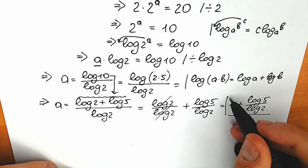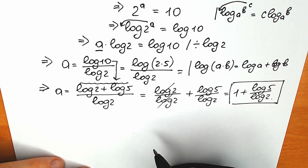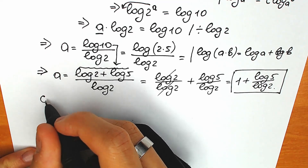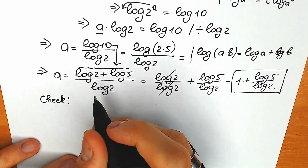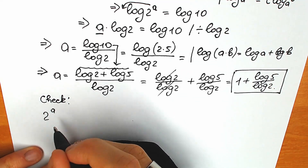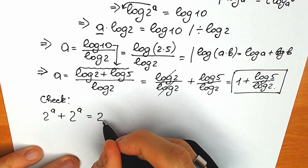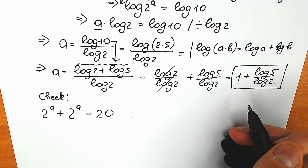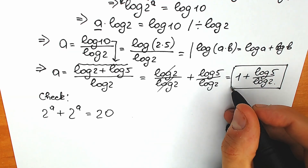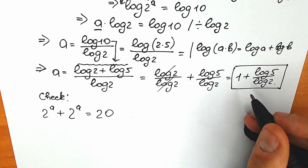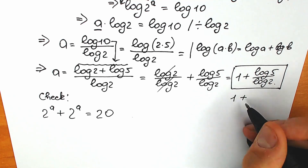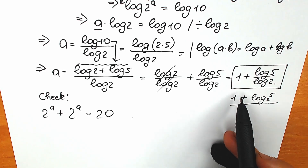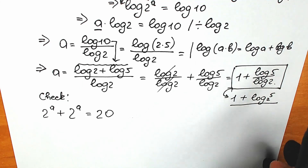This is our final answer. Now let's do a quick proof. Here's our question: 2 to the power a plus 2 to the power a equal to 20. For further calculation, I'm going to show you another option. This log 5 over log 2 is really great to express as log 5 base of 2, so we have a equal to 1 plus log 5 base of 2. This one and this one are absolutely the same thing, according to a really great log property.